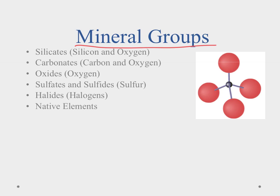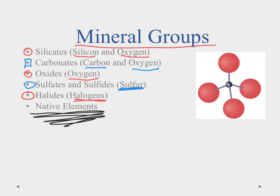Now let's talk about mineral groups — how we classify minerals. We classify minerals based on their composition: what are they made of, what elements are inside them. The most common are the silicates, which contain silicon and oxygen. Next are carbonates, which have carbon and oxygen. We also have oxides, which simply contain oxygen. There are sulfates and sulfides, which contain sulfur. We have halides, which contain halogens — one of the last groups on the periodic table. Finally, native elements are minerals made of a single element by itself — familiar examples include silver, gold, and carbon in the form of diamonds or graphite.